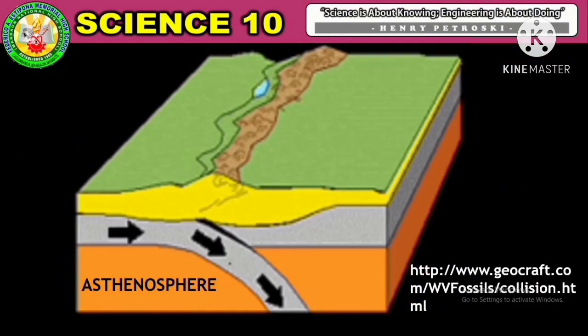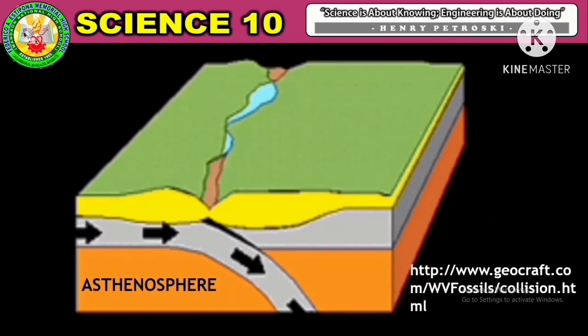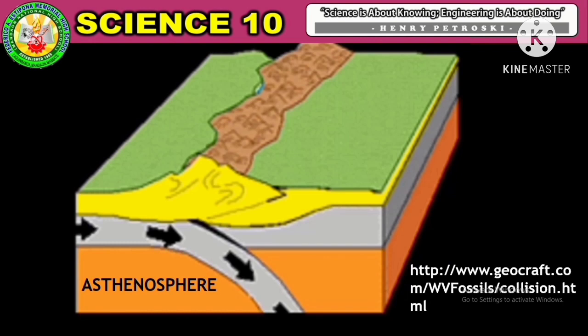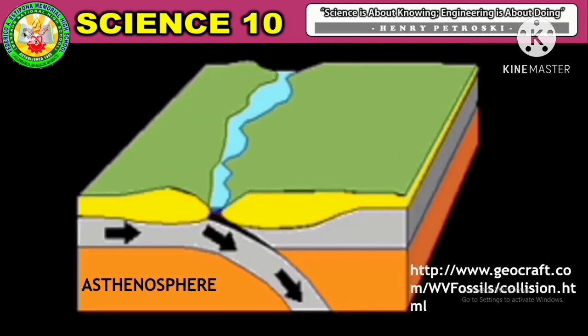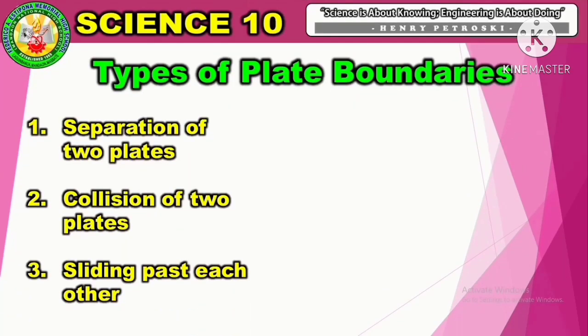The Earth's lithosphere is divided into several plates. As you have already learned, these plates ride over the weak asthenosphere. There are three types of plate movements: separation of two plates, collision of two plates, and sliding past each other.